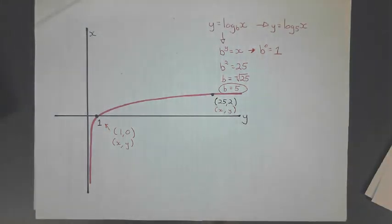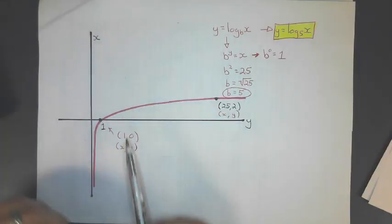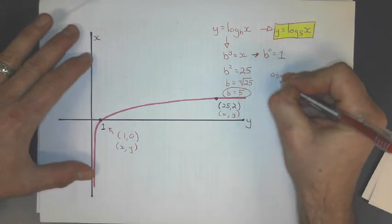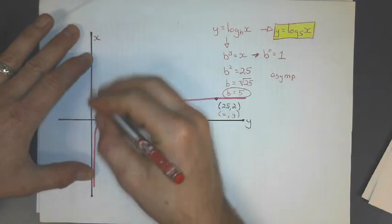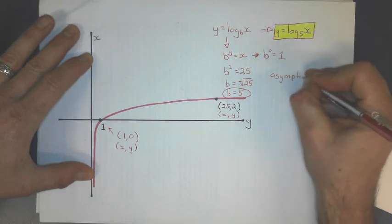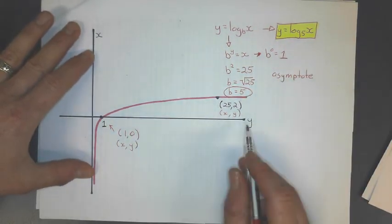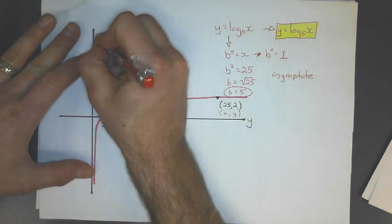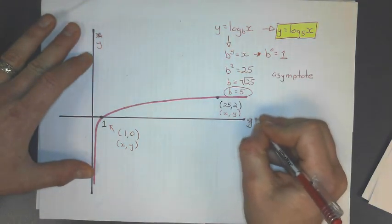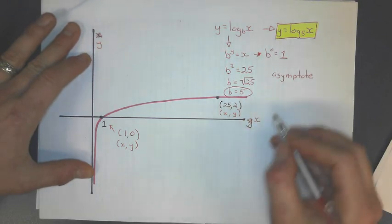And so since there's no horizontal shift there, the asymptote of this graph is just the y-axis. I have these labeled around incorrectly. What am I thinking? This is y, and this is x. Shame on me. The asymptote is the y-axis,